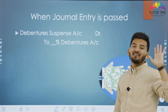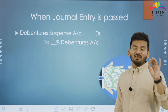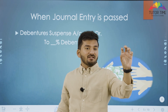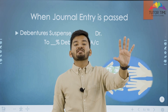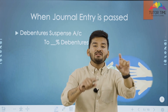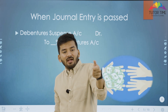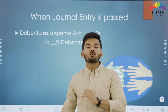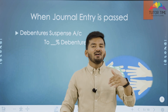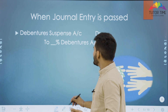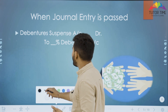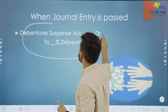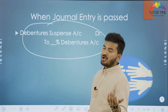When journal entry is not passed, you just disclose the loan — secured by so-and-so debentures issued as collateral security. When journal entry is passed, it is a notional or imaginary journal entry: Debenture Suspense Account debited to Debenture Account. Simple.